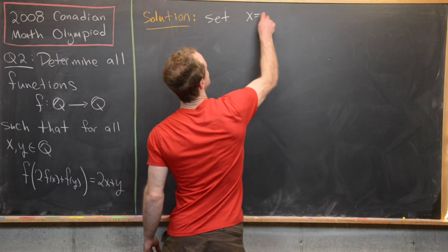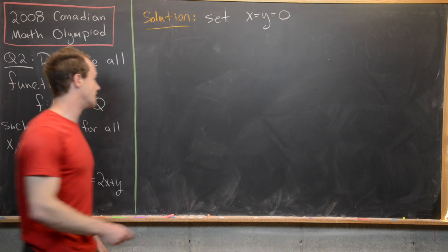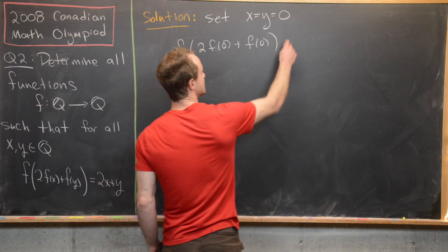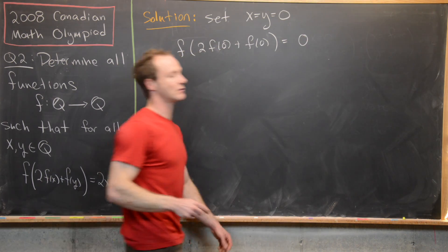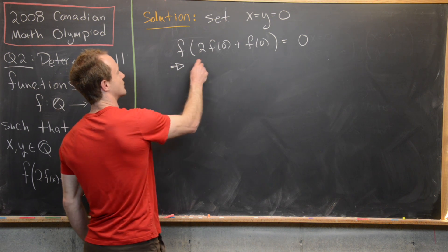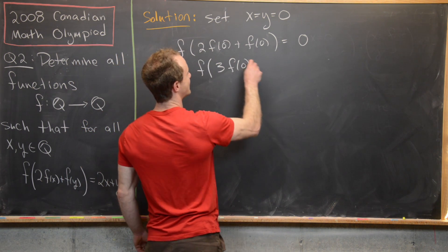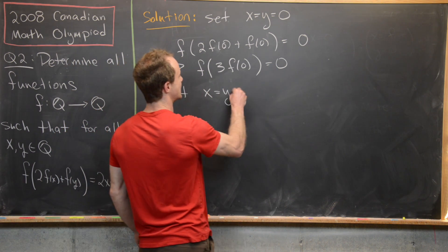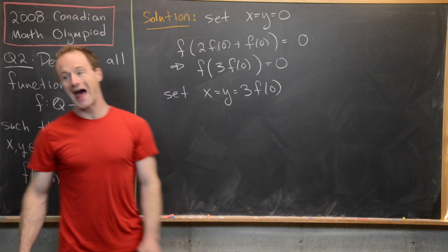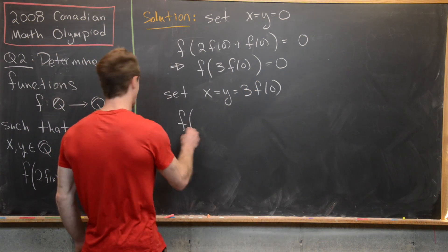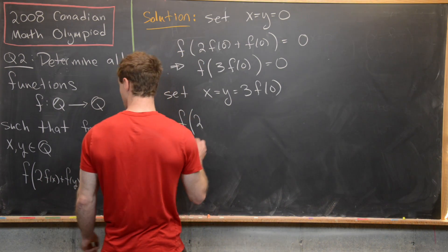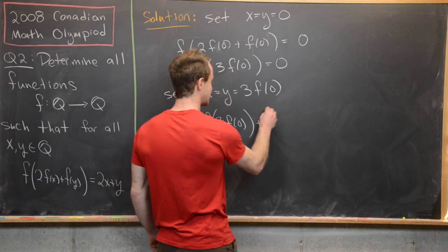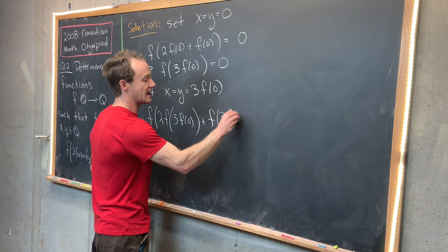The first time, we're going to set x equal to y equal to zero and see what happens in this functional equation. That's going to give us f evaluated at two f of zero plus f of zero on the left-hand side, equals two times zero plus zero, which is zero on the right-hand side. That simplifies the left-hand side to f of three f of zero equals zero. Now we're going to take advantage of this fact by setting x equal to y equal to three f of zero and plugging that back into the functional equation. On the left-hand side we get f evaluated at two times f evaluated at three f of zero, plus f evaluated at three f of zero.